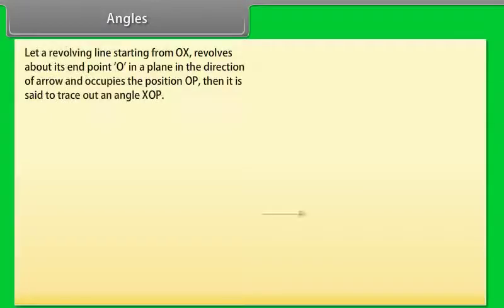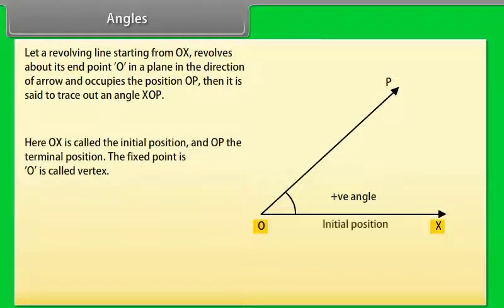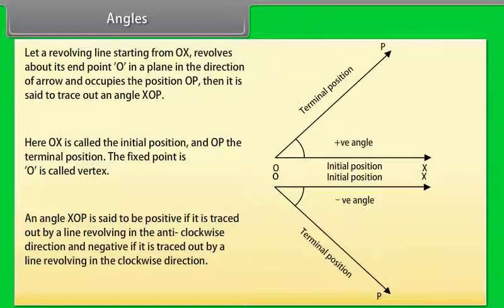What are angles? Let a revolving line starting from OX revolve about its end point O in a plane in the direction of the arrow and occupy the position OP. Then it is said to trace out angle XOP. Here OX is called the initial position and OP the terminal position. The fixed point O is called the vertex. Angle XOP is positive if traced out in the anticlockwise direction and negative if in the clockwise direction.